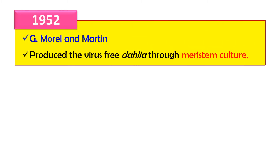The first meristem culture was used for Dahlia by Morel and Martin. By this meristem culture, a virus-free plant was produced. So the first virus-free plant was produced using meristem culture by Morel and Martin in 1952.